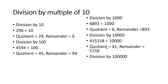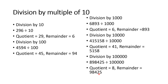Division by 1,00,000: since there are 5 zeros, we hide up to the ten-thousands place. For example, 8,98,425 divided by 1,00,000 — the remaining number 8 is our quotient and 98,425 is our remainder. This way we can directly state the quotient and remainder.